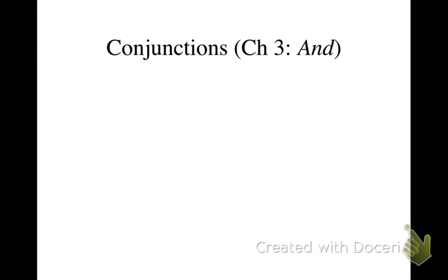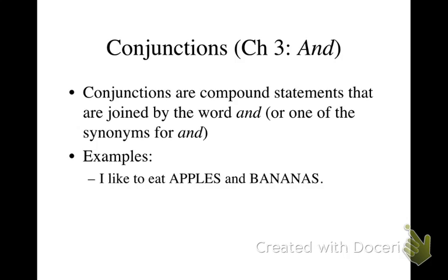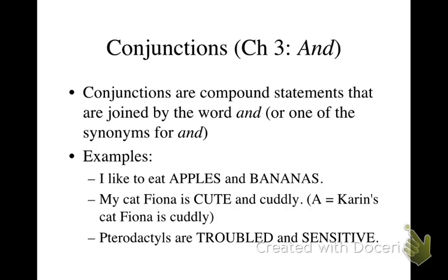This video will explain how to translate basic conjunctions. Conjunctions are compound statements that are joined by the word AND, or one of the synonyms for AND. Some examples: I like to eat apples and bananas. My cat, Fiona, is cute and cuddly. Pterodactyls are troubled and sensitive.